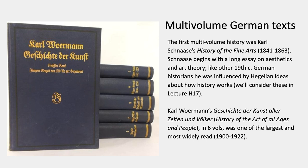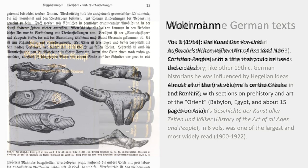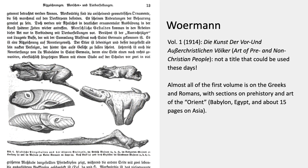Projects were still being started before the First World War and all the way up to the Second World War. Vorermann's first volume, out of his six, is called The Art of Pre- and Non-Christian People — not a title you could write these days. Almost all of that first volume is on Greeks and Romans, with only brief sections on prehistory and the art of what he calls the Orient, meaning Babylon, Egypt, and about 15 pages on Asia. So not much. The history turns fairly quickly to Europe.